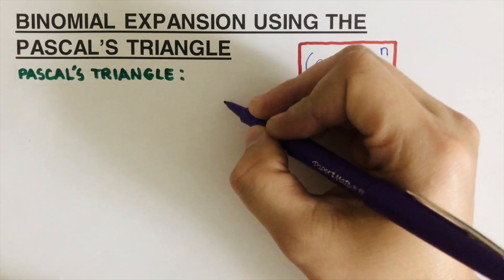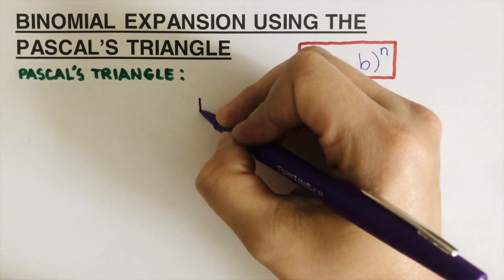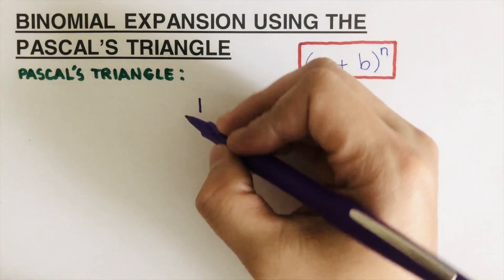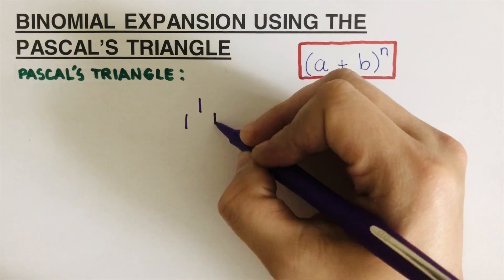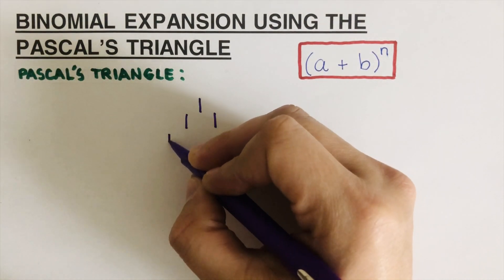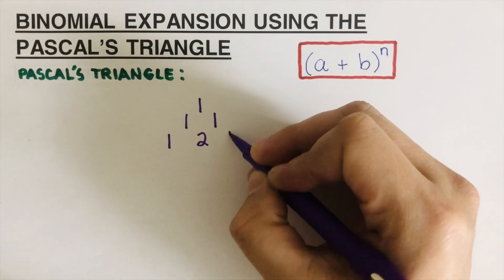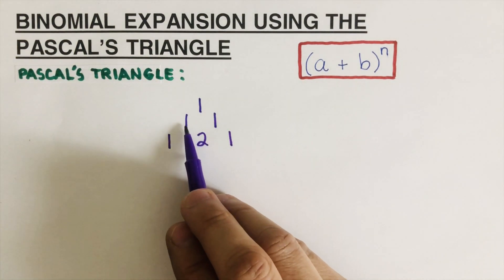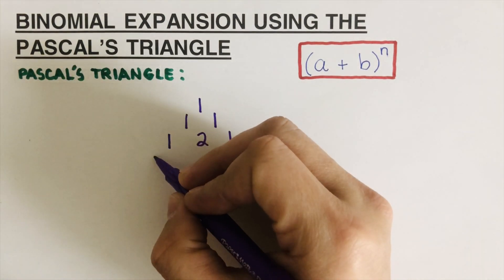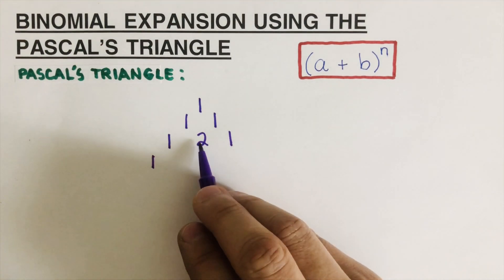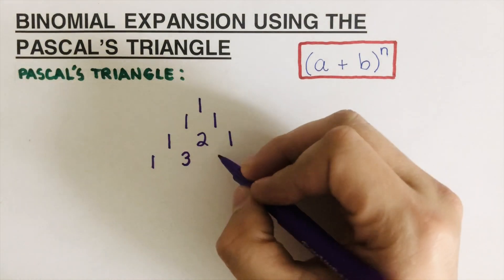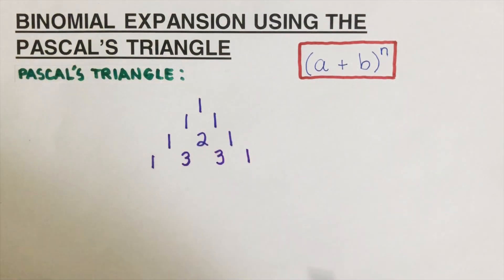We're going to start with one at the top. To get to the next row, we form a triangle going down — so it's one and one. The next row is one, two, one. The two is placed in the middle of the two ones above it. The sides will always be one.